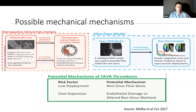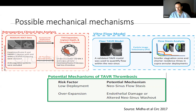There is also a lot of work as it relates to computational fluid dynamics and advanced analytics to better understand the concept of altered neosinus washout, endothelial damage, and neosinus stasis — to understand to what extent mechanical forces and sluggish flow in the neosinus may be driving valve degeneration or leaflet thrombosis, versus the biological elements related to perhaps endothelial dysfunction and an inflammatory reaction to the native aortic valve being crushed aside during TAVR. All of these complex interplays between imaging, metabolic imaging, and computational modeling need to be understood.